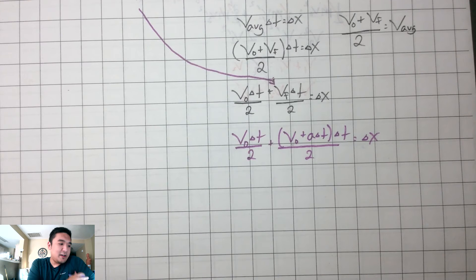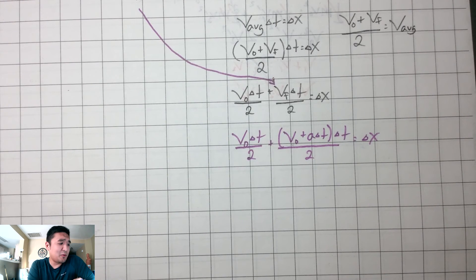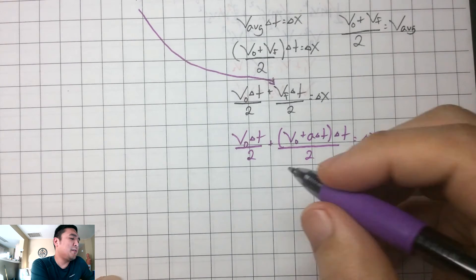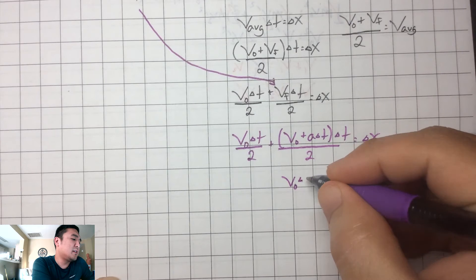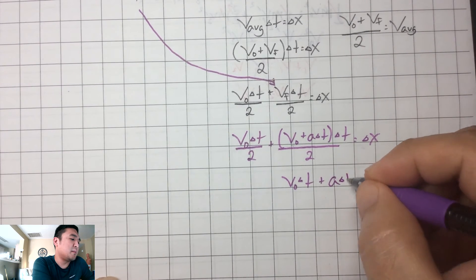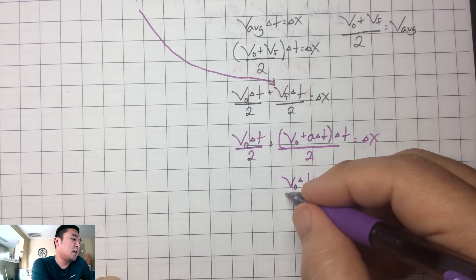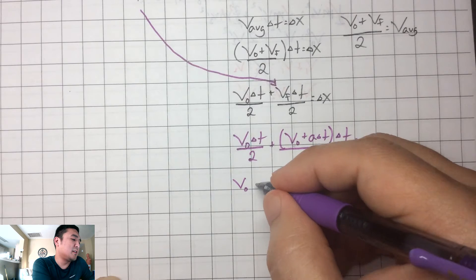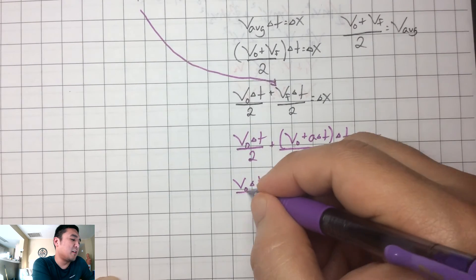Oh, we're getting mathy. I promise there's a point. I hate getting mathy, but there's a point. Let's do the distributing. And we have initial velocity times the time plus acceleration times the time squared. All that divided by two. I don't know why I didn't just keep it there. Everything divided by two.